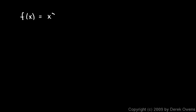For example, if you were told that f of x is equal to x to the fifth, and you had to find the derivative, f prime would simply be 5 times x to the fourth. You take your exponent, which in this case is a 5, and just bring it out front as a constant multiplier, and then reduce the exponent by 1, so the 5 becomes a 4. And it's that simple every single time.